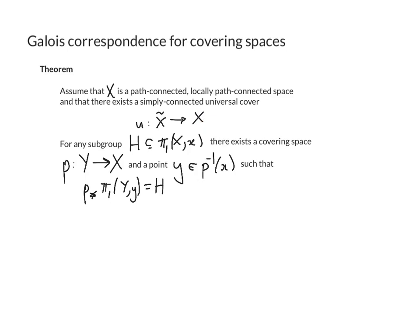Under those assumptions, we're going to prove that for any subgroup h in the fundamental group of x, there's a covering space p maps y to x, and a base point little y in p inverse of little x, such that p star pi 1y at y is h.